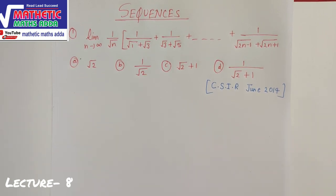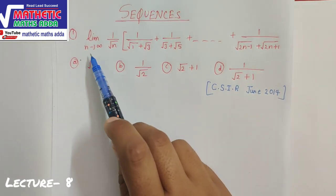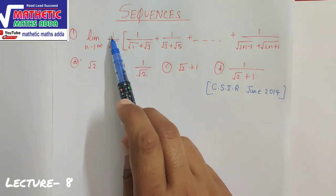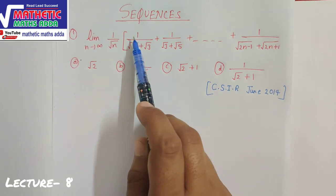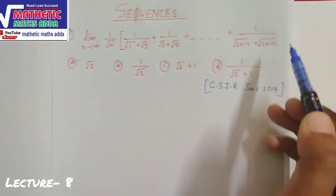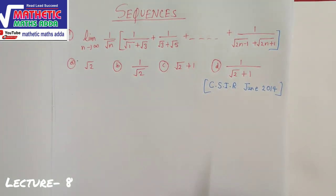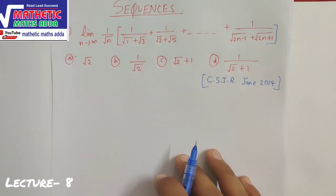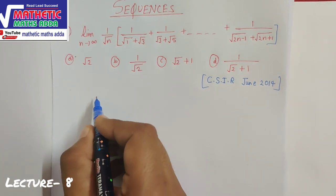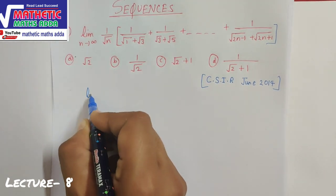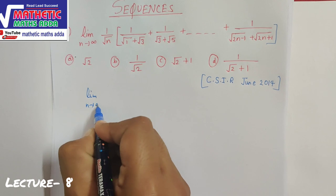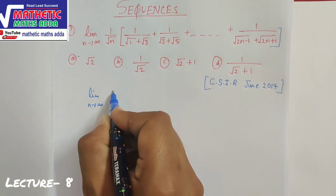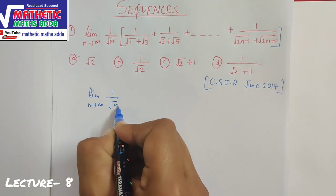We will solve the first question asked in CSIR June 2014. You are given the limit as n tends to infinity of (1/√n) times a whole sequence, and you have to evaluate the limit.